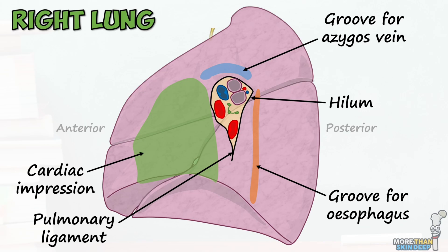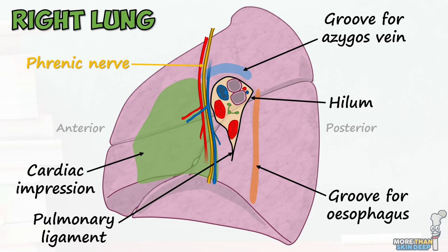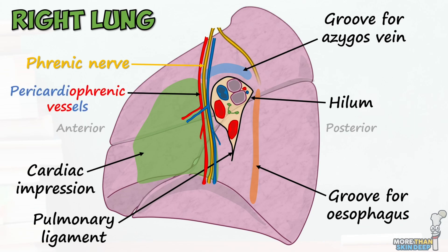Just anterior to the hilum of the lung runs the phrenic nerve, which starts up in the cervical spine and passes down through the mediastinum to supply the diaphragm. Accompanying this are the pericardiophrenic vessels. And just posterior to the hilum is the vagus nerve, which starts all the way up in the brain and travels down the body to supply a huge range of structures including the heart and bowel.